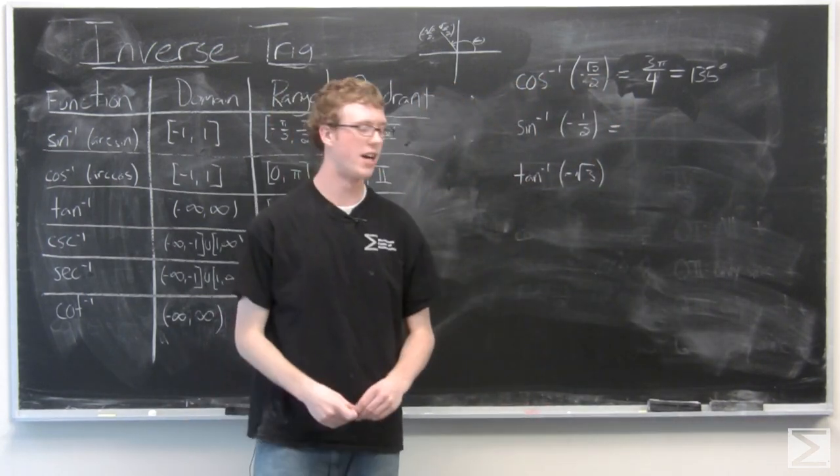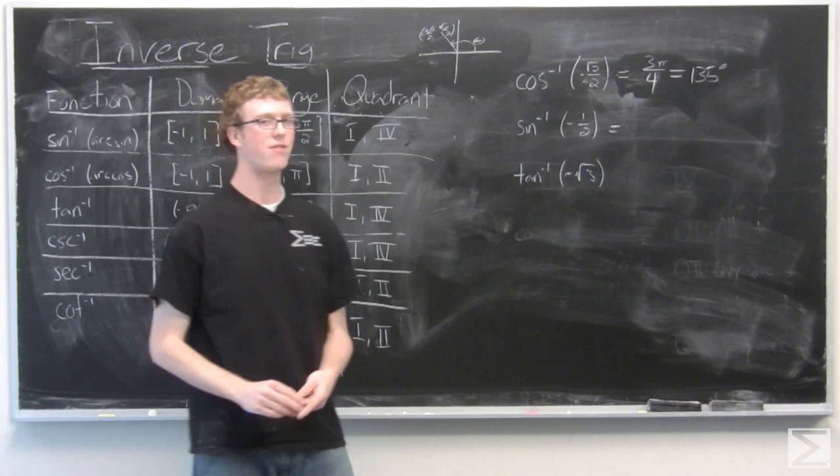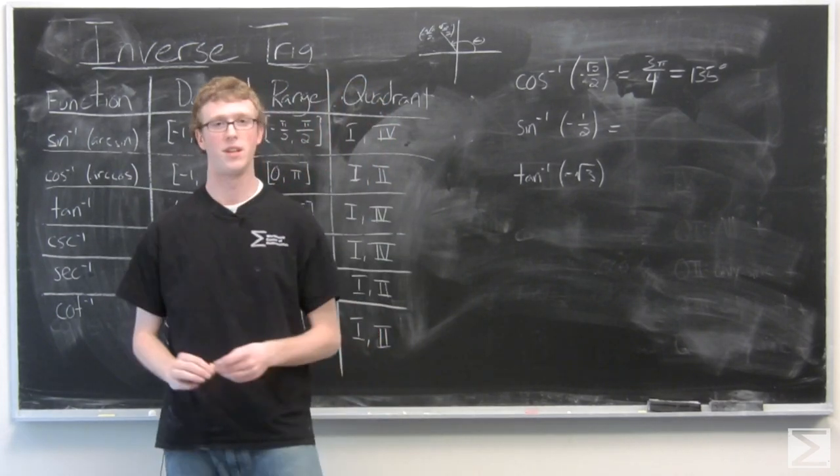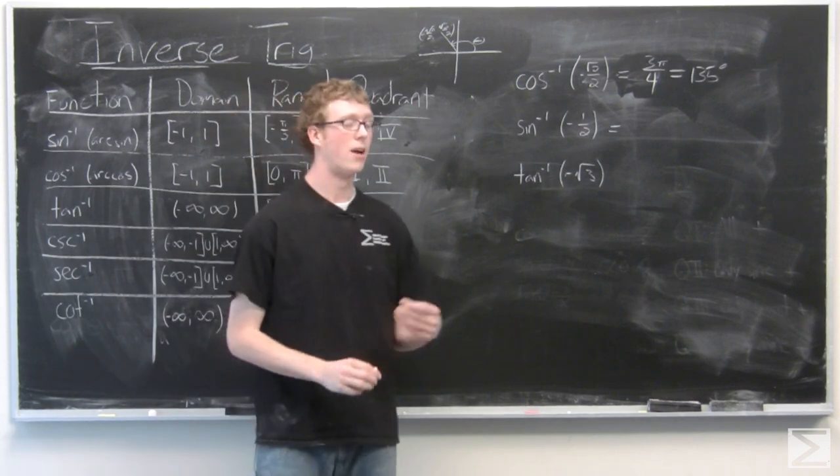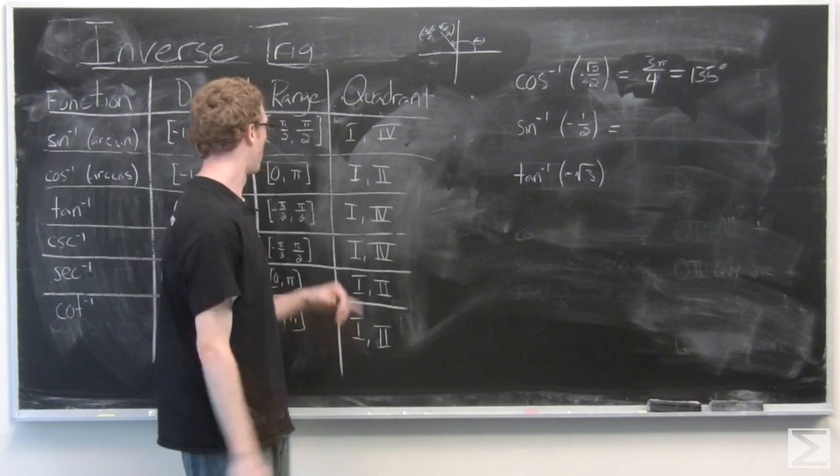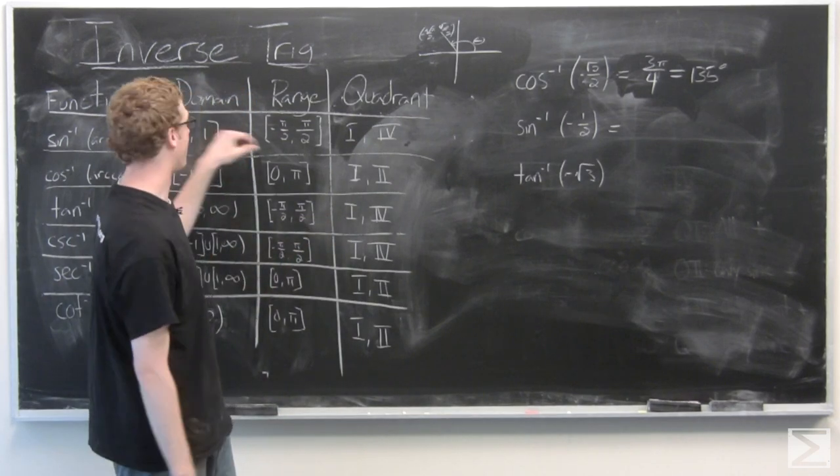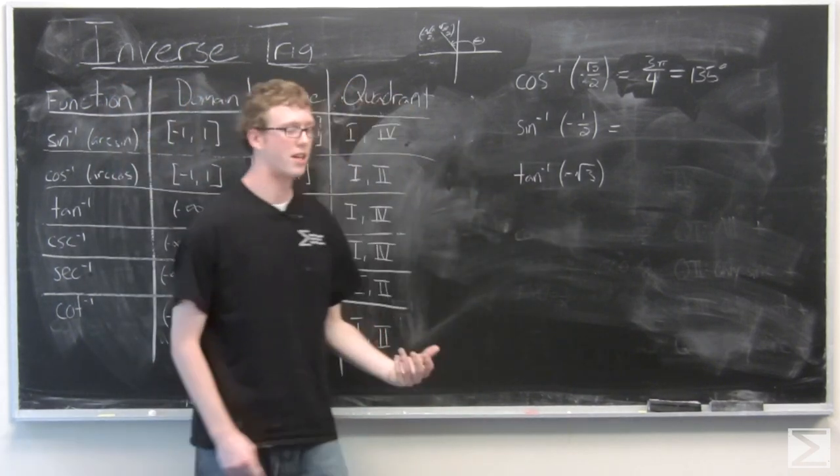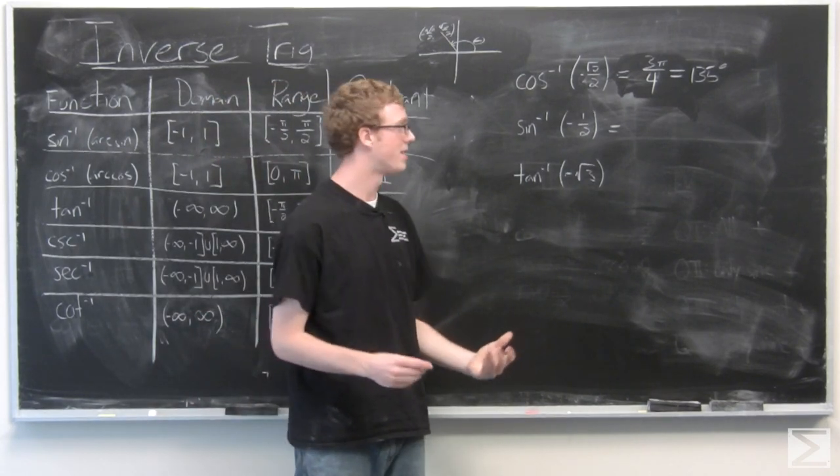So now we're going to go ahead and look at inverse sine of negative 1/2. We know that sine is negative in the third and fourth quadrant. So we know we're going to be looking to work in the fourth quadrant because that's where inverse sine lives. So sine negative 1/2, we need to figure out which angle that is.